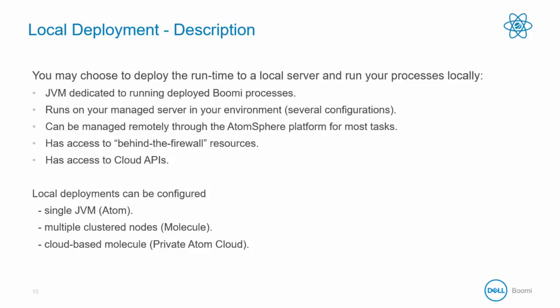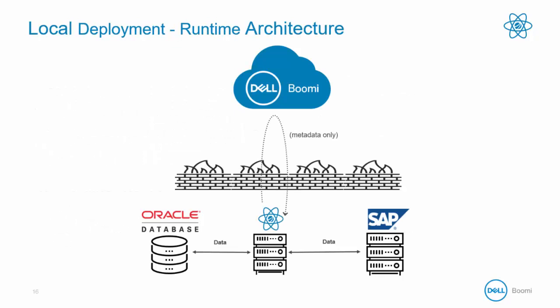A local deployment is either an Atom, which is a single JVM; a Molecule, which is multiple clustered nodes or multiple clustered JVMs; or a private Atom Cloud, which is a cloud-based molecule. This illustration shows a local deployment where the runtime — the blue Atom symbol — resides on-premise behind the firewall, allowing all data moved to remain within your own data center. You can also integrate with cloud APIs and online applications directly using a local deployment.